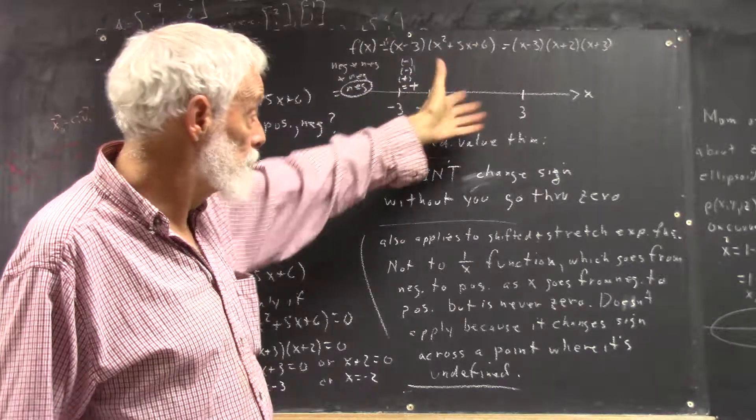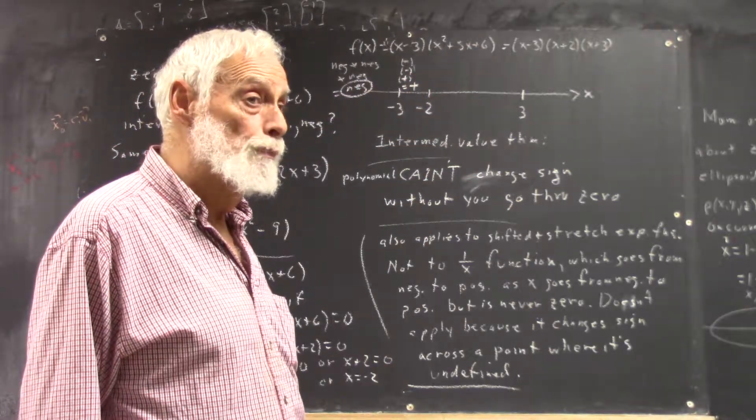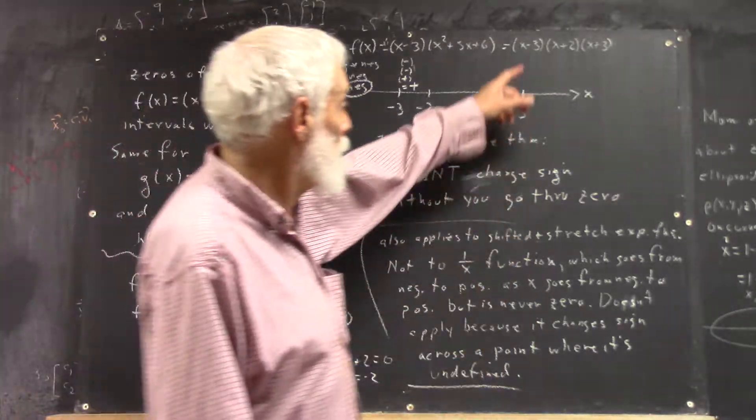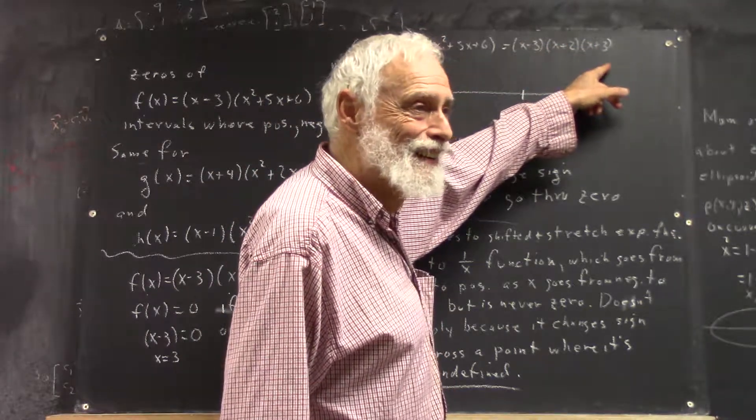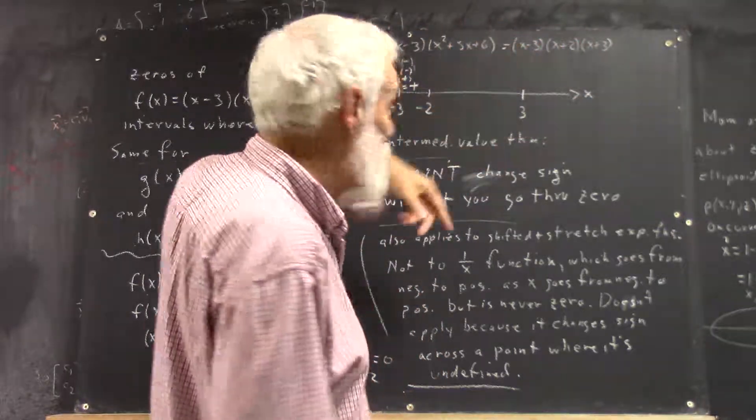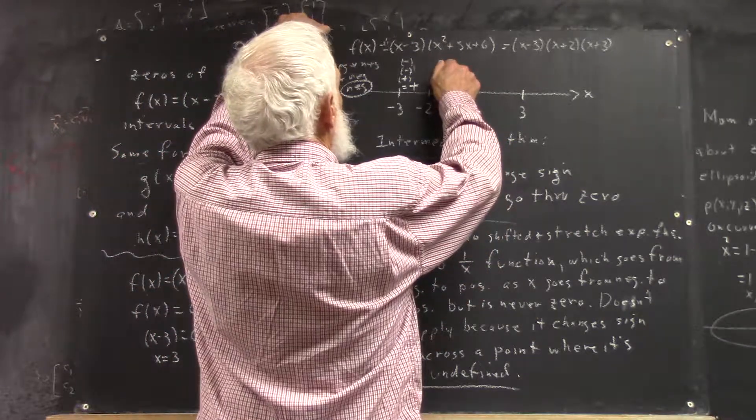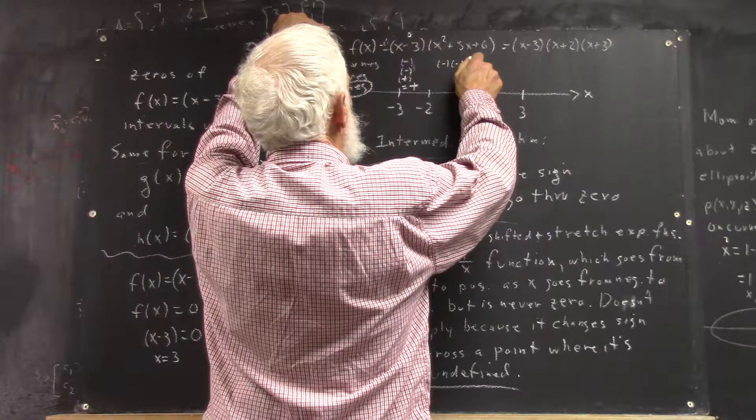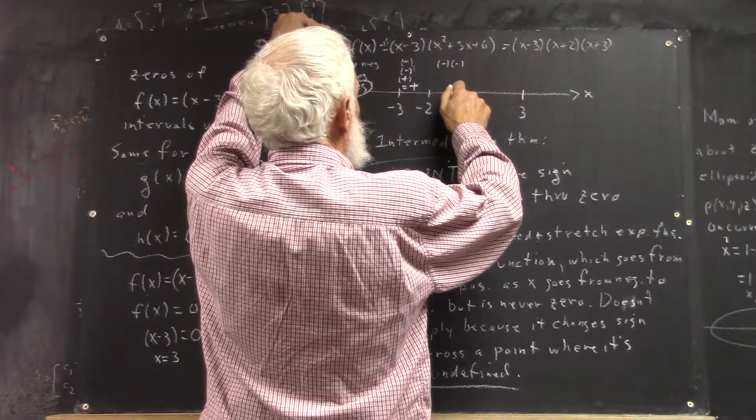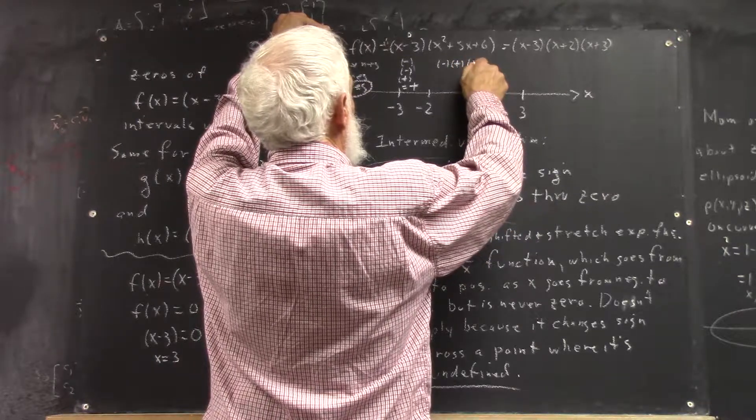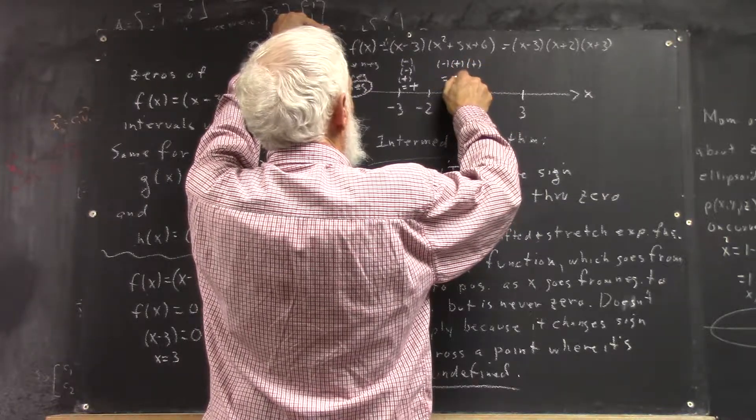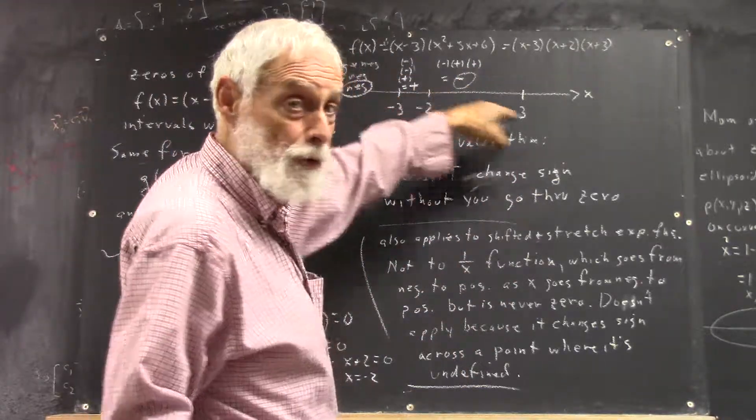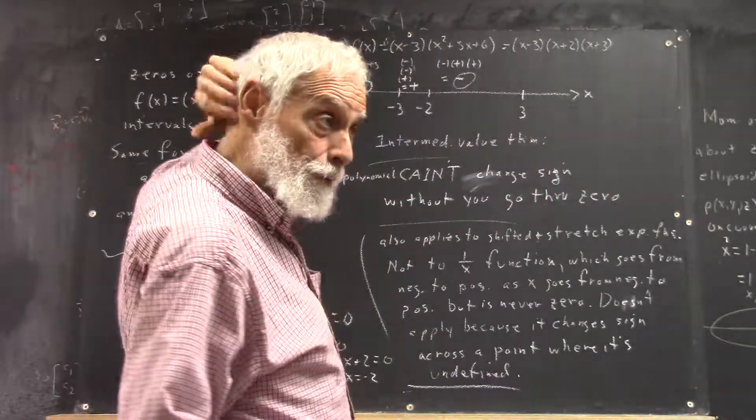What's an easy number to use? I'd use 0, but negative 1 would be okay too. 0 would give you negative, positive, positive. So with negative 1, you can check that out. So it's negative. Understand what I'm showing you? Understand how to do this?